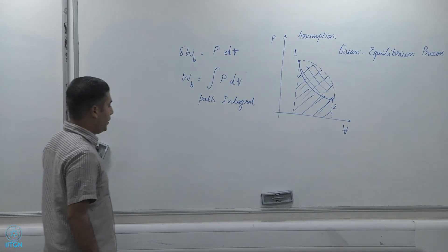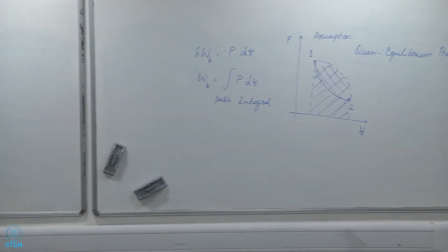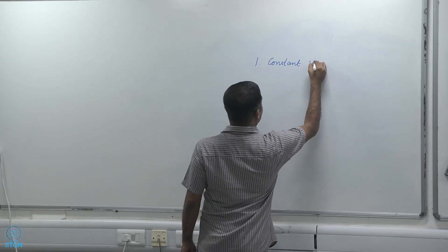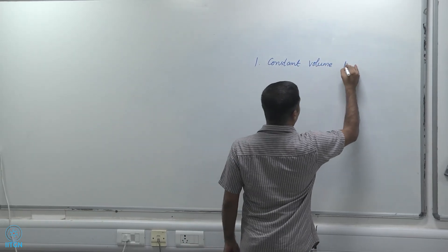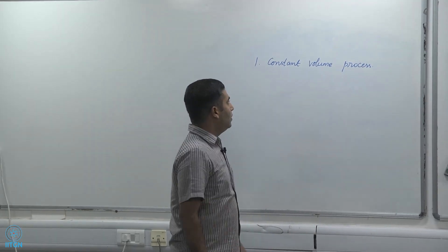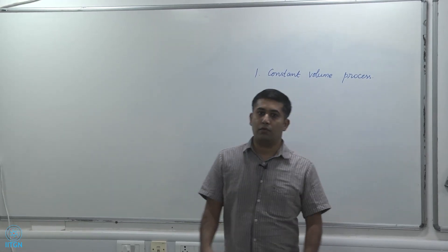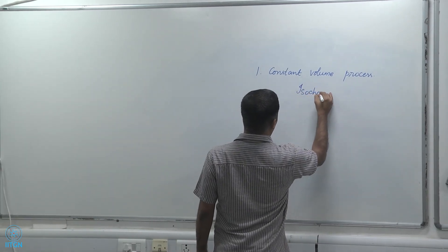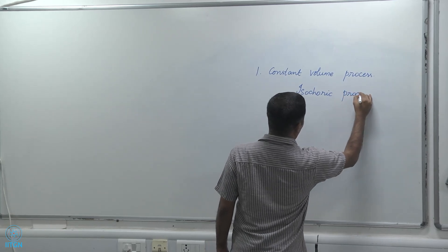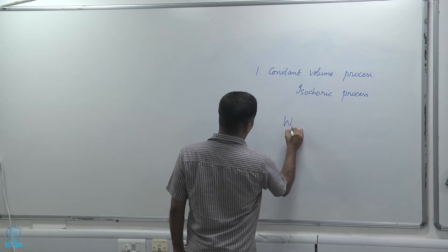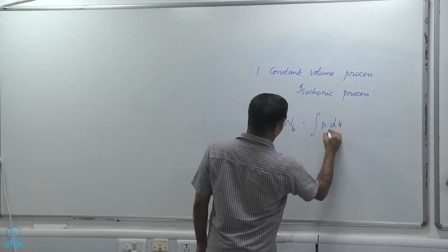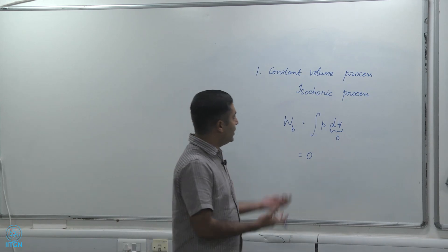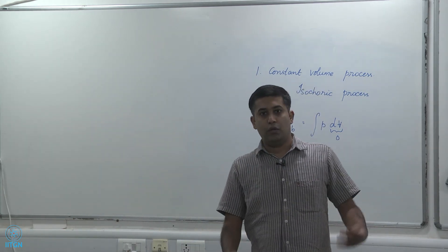Let us look at some typical examples. The first is a constant volume process. There are many situations where the volume remains constant — that is a constant volume process, also sometimes called an isochoric process. Obviously it is a trivial case because W_B equals the integral of P dV and dV is zero, so the moving boundary work is zero. If the volume doesn't change, the moving boundary work is just zero.